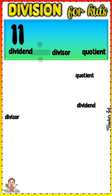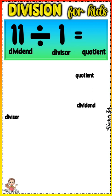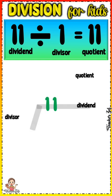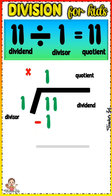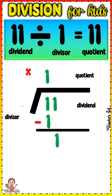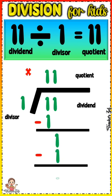11 divided by 1 equals 11. 1 divided by 1 equals 1. 1 times 1 equals 1. 1 minus 1 equals 0. Bring down 1. 1 divided by 1 equals 1. 1 times 1 equals 1. 1 minus 1 equals 0.